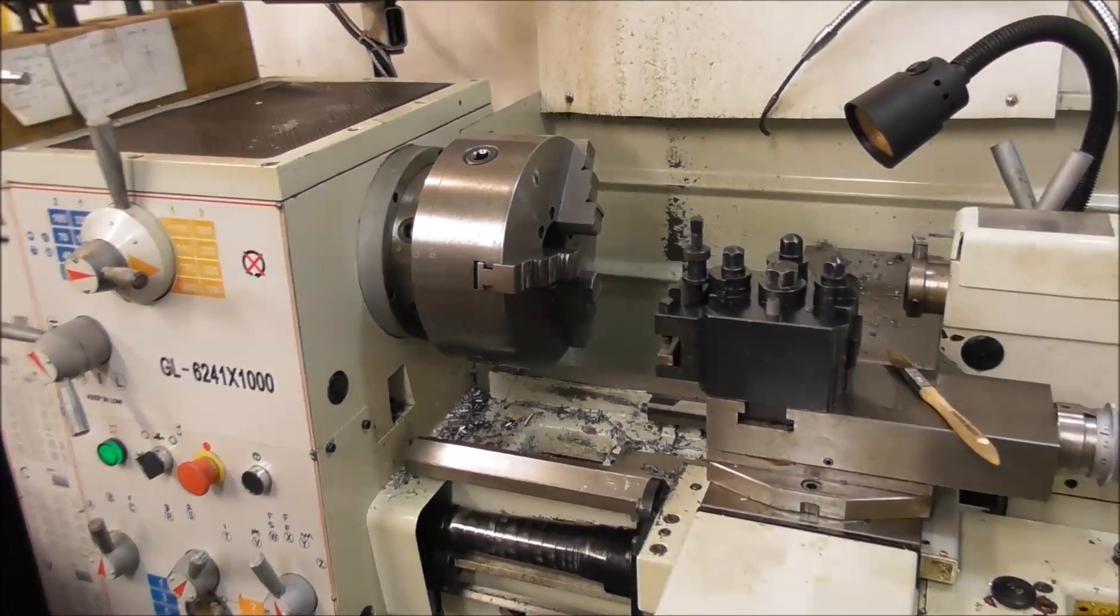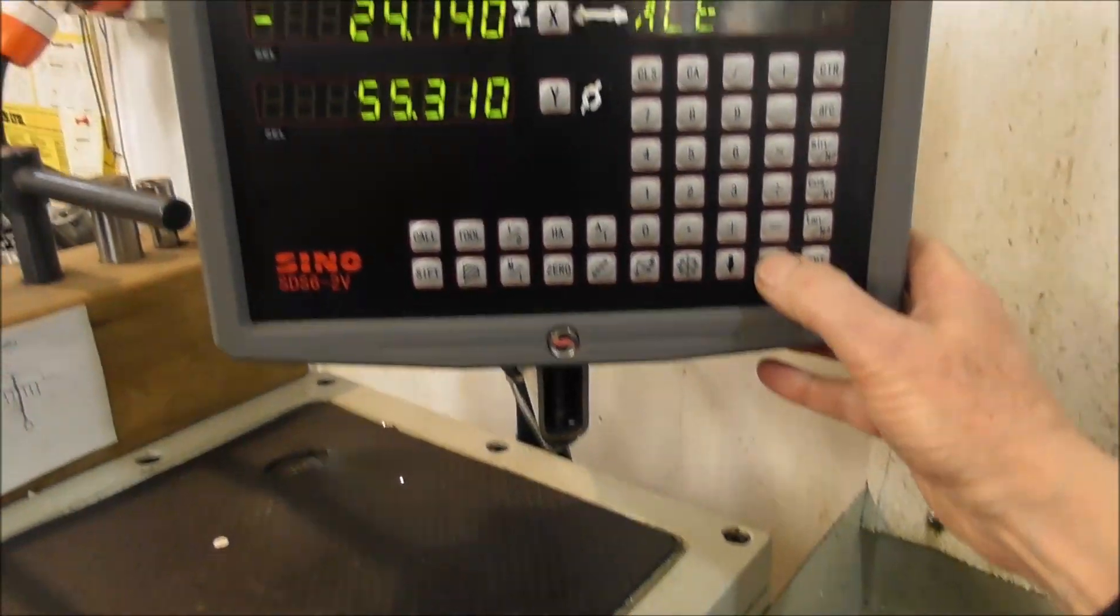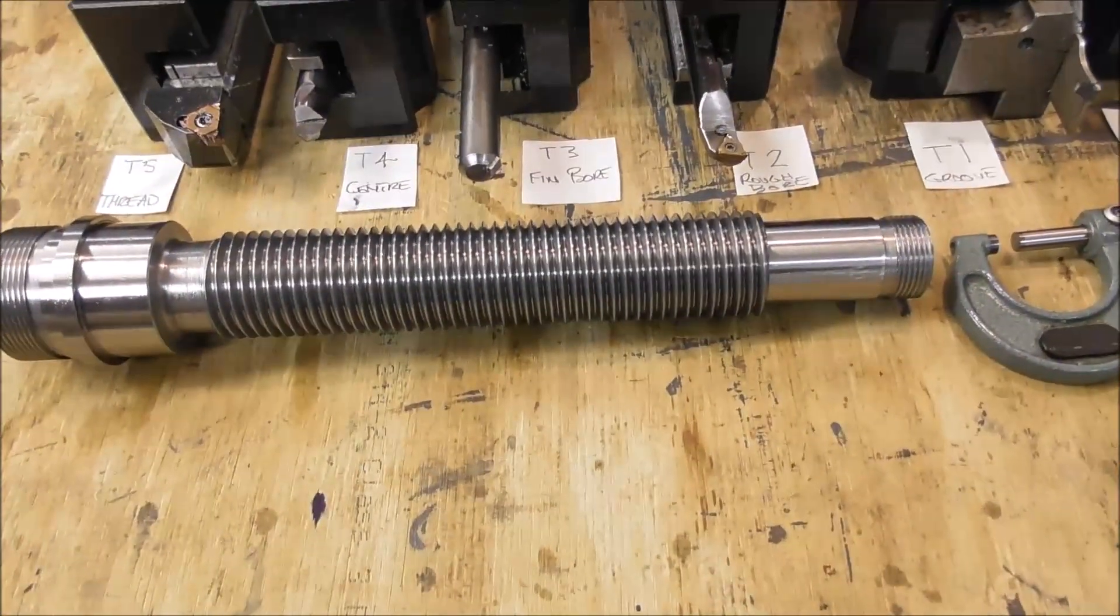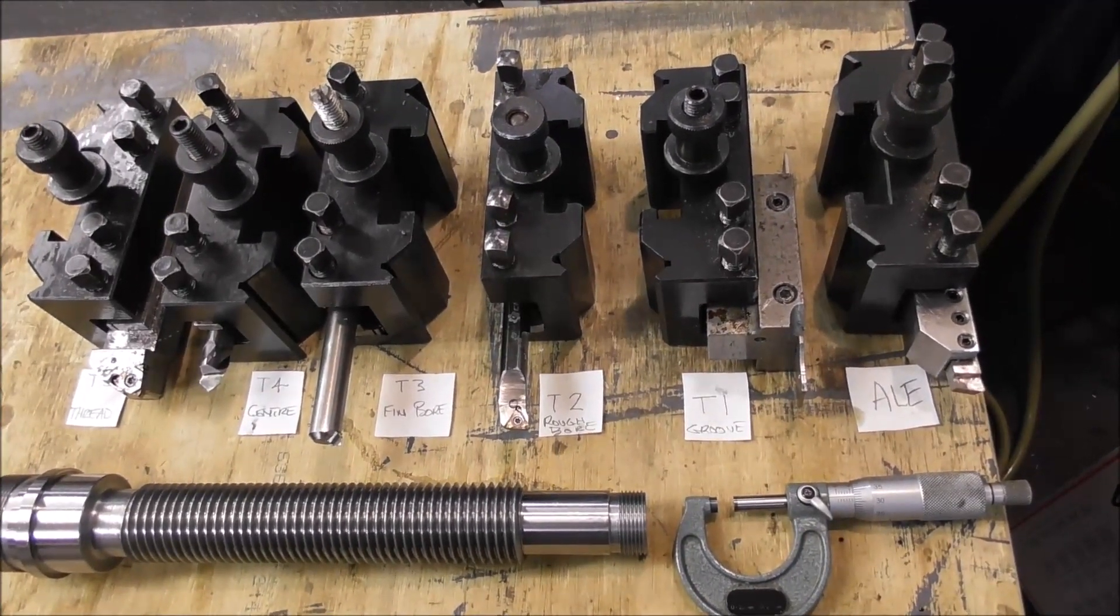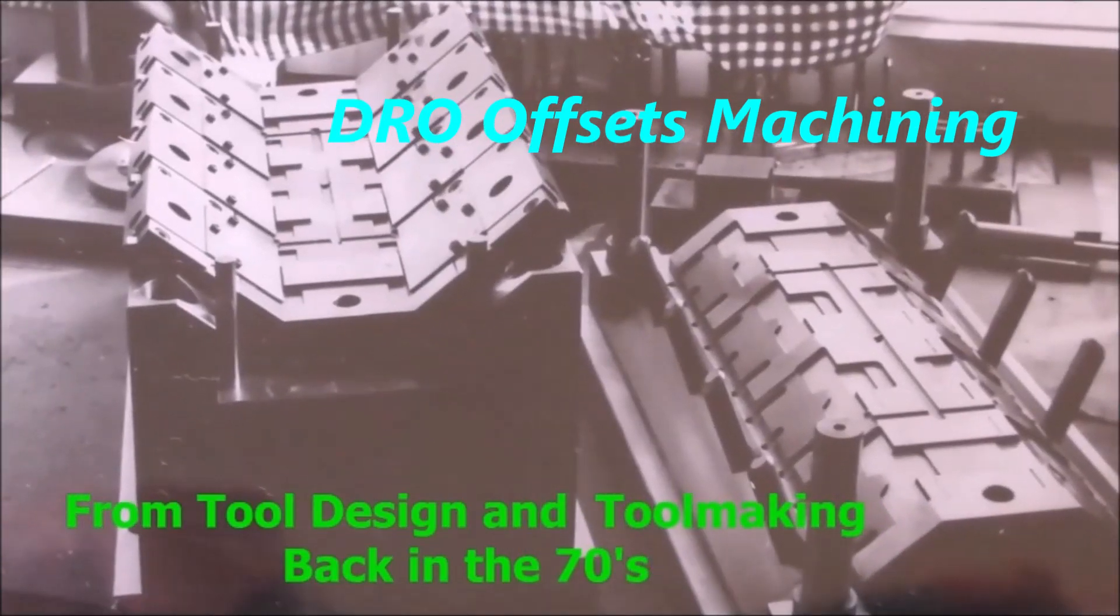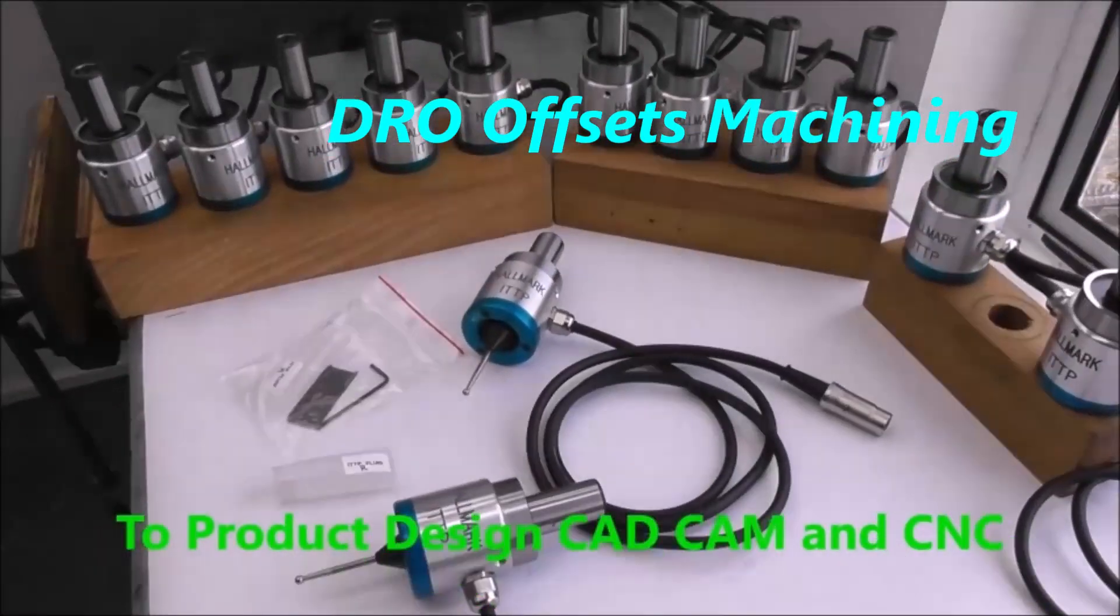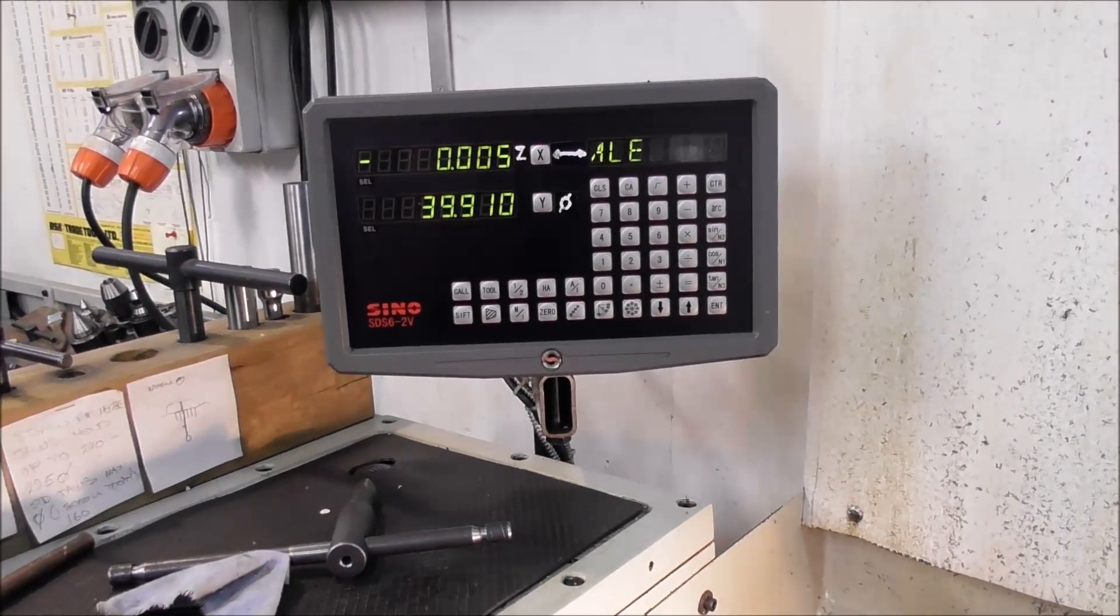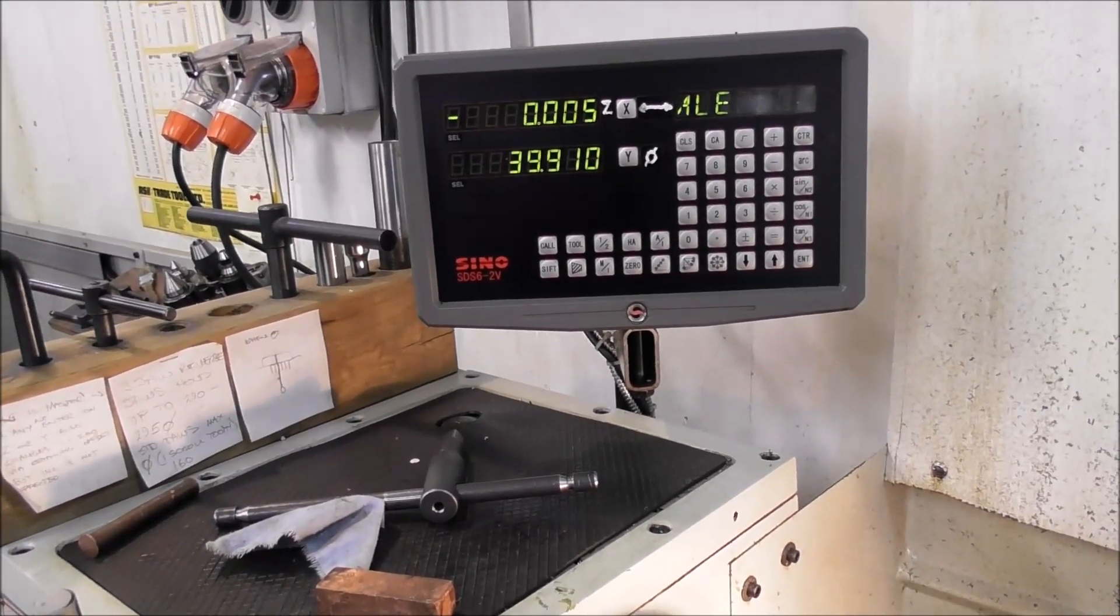In this video I'm going to outline how you can use your center lathe with your digital readout using work and tool offsets and machine parts very quickly and efficiently, and use your lathe much like a CNC lathe. I'm just checking most of you are aware of how to fully utilize your digital readout. It has a huge powerful capacity if you use it for setting your work and tool offsets.